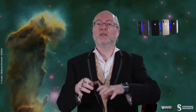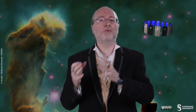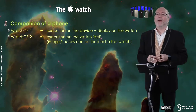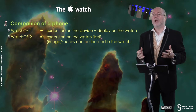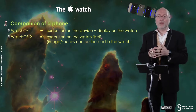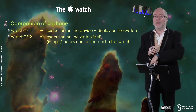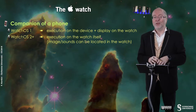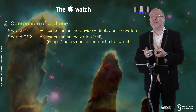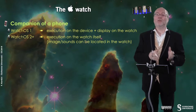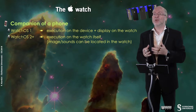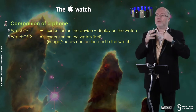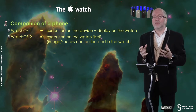The Apple Watch is a companion to a phone, meaning you can only pair it to a phone. In WatchOS 1, the execution of user programs was not taking place on the device but on the phone, with a distant display on the watch. But since WatchOS 2, and this is still true with WatchOS 5, the execution is on the watch itself. From a programming perspective, it's totally transparent.